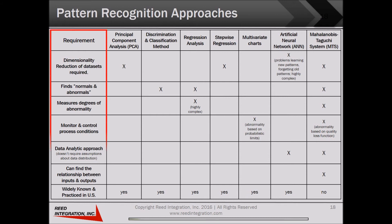Here's a brief comparison of several popular pattern recognition methods like PCA and neural networks to MTS. MTS provides consistent advantages, particularly in its capability to reduce the size of data sets required, its ability to separate normal from abnormal individuals, and its data analytic approach instead of statistical analysis.